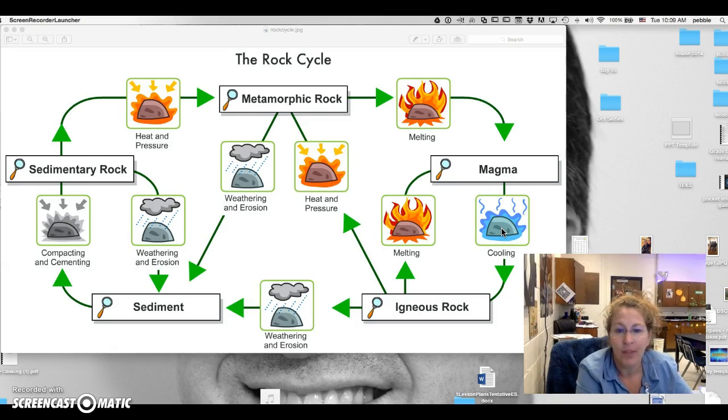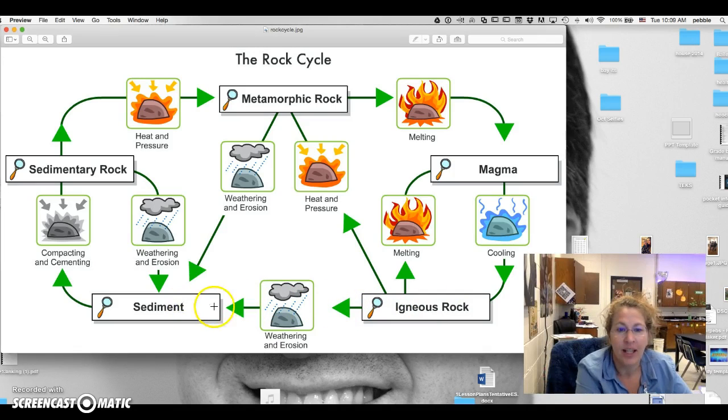So igneous can turn into igneous. Then if we go from igneous to sedimentary, several things have to happen. The igneous rock has to be weathered and eroded. This can be from rain, it can be from the wind, anything that's going to break down the rock into smaller and smaller pieces.